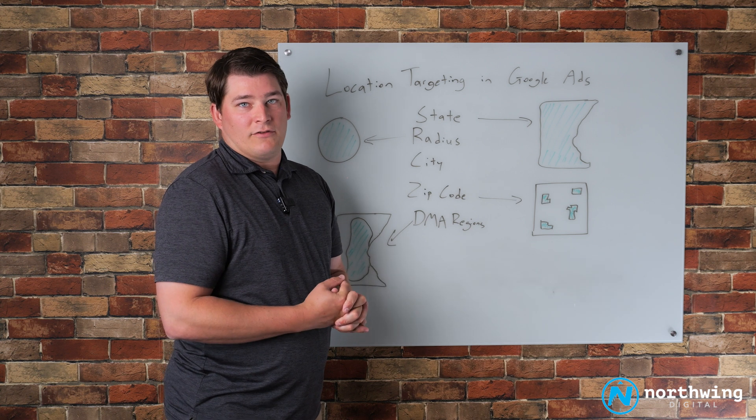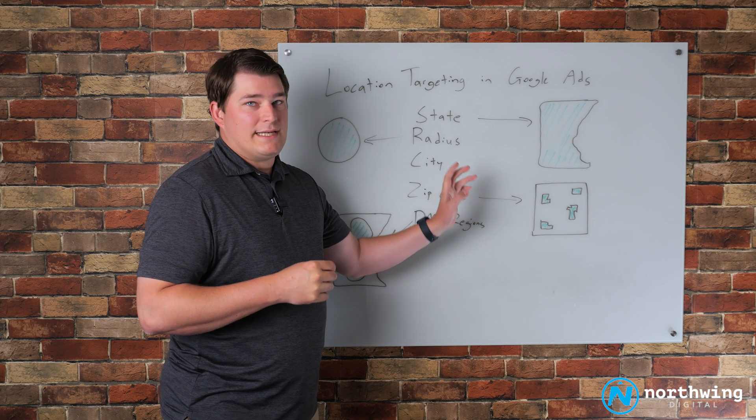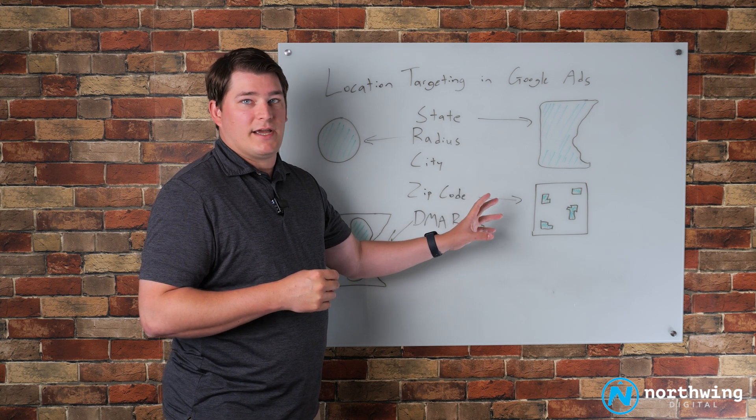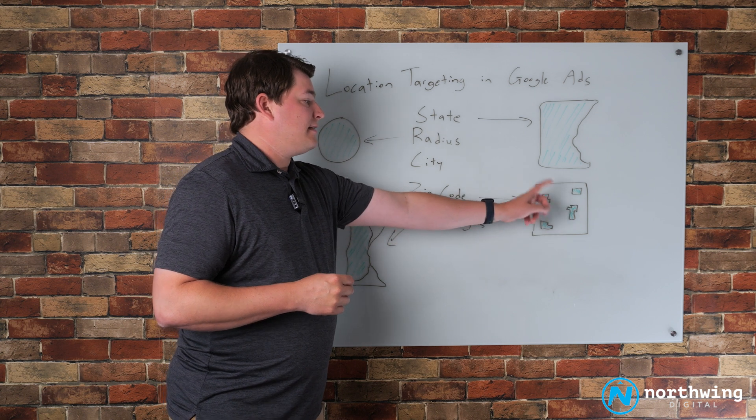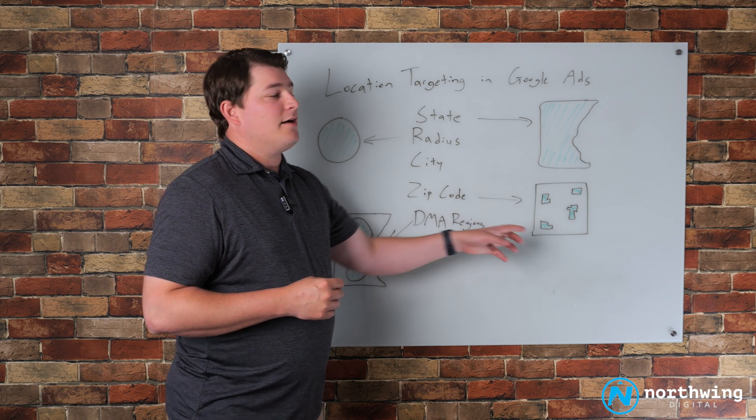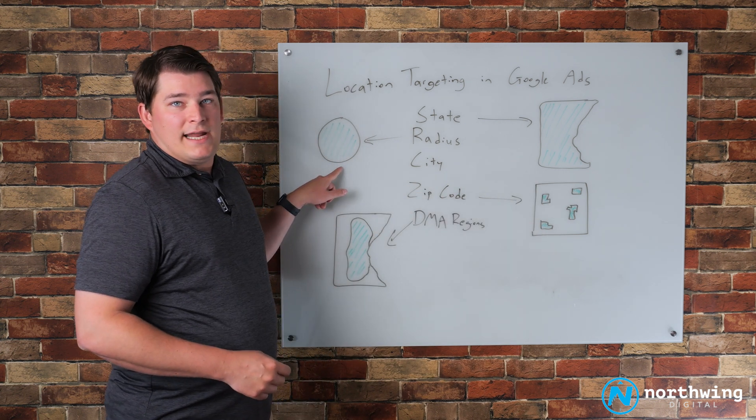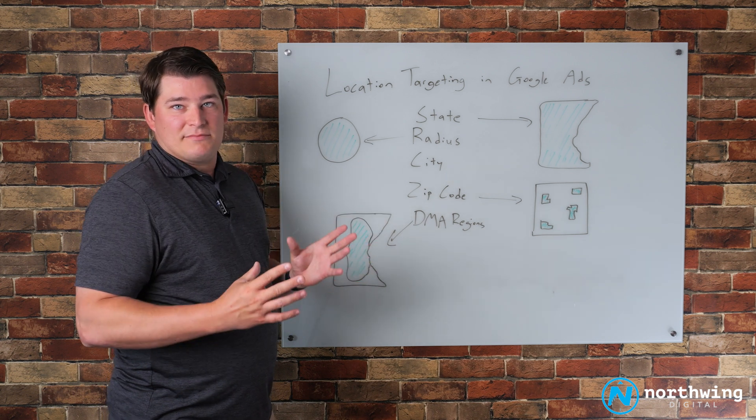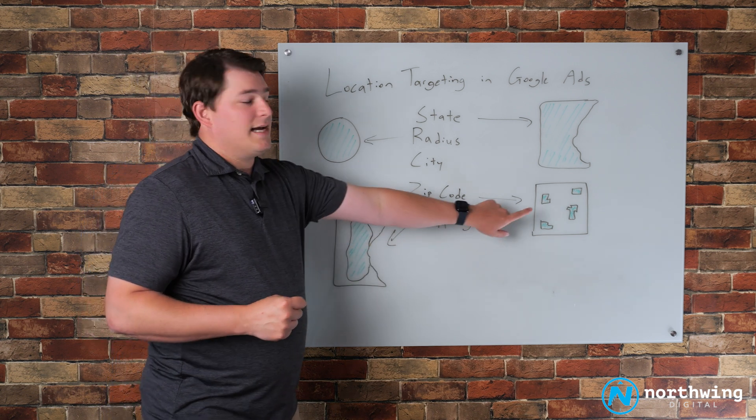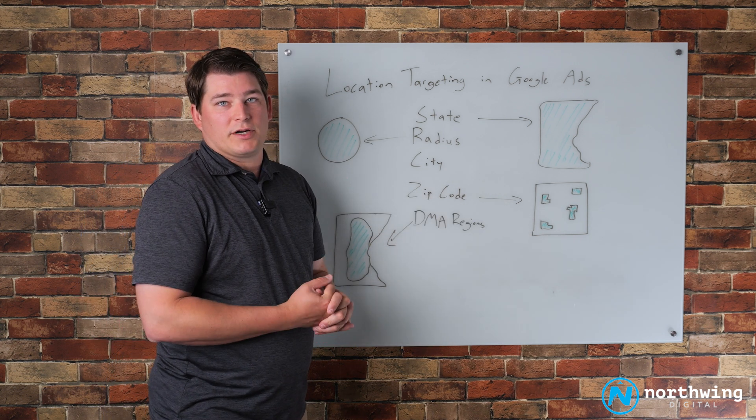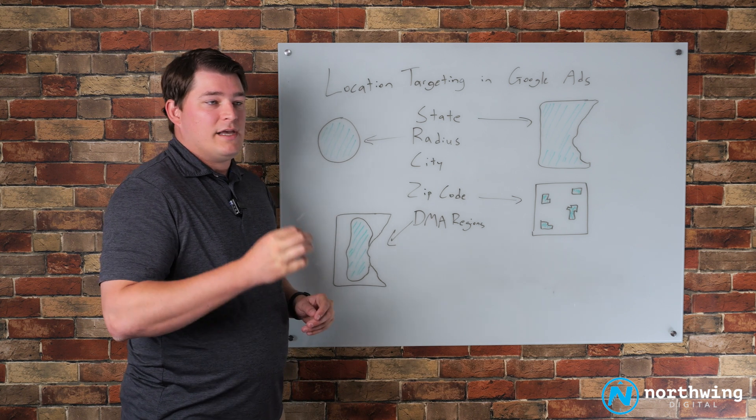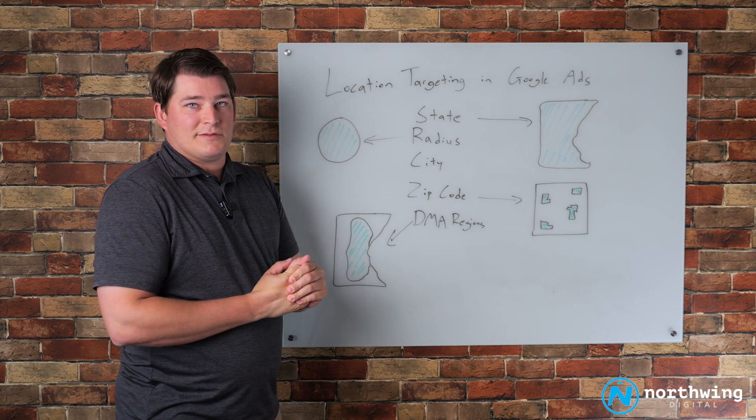What we typically like to do is take their list of zip codes, plot it out, and then figure out radius targeting that encompasses the vast majority of those zip codes but isn't as limiting as what this patchwork structure ends up being.